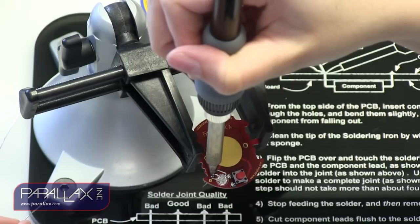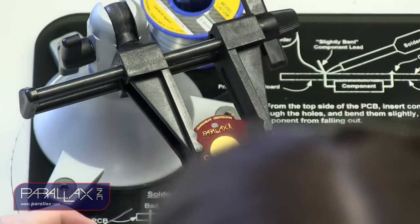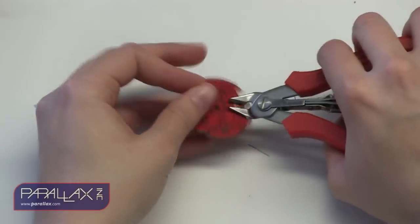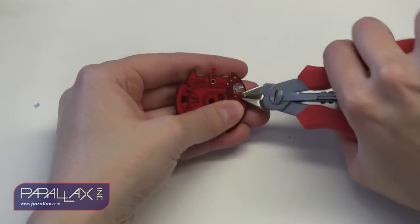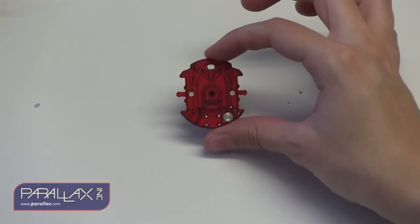Remove the solder. Leave the soldering iron on for another couple of seconds. And then remove the iron. Remove the board from the Panavise Jr. and then use the wire cutters to clip the LED and push button leads so that they're flush with the board.